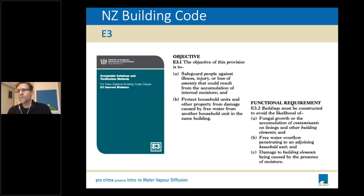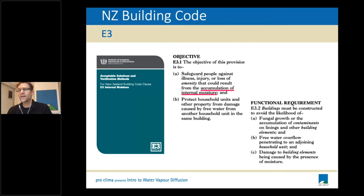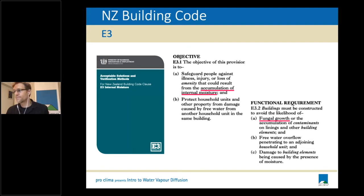E3 - most people on this call will be familiar with it, but a lot of building professionals aren't. It's very easy to ignore E3 in a lot of constructions because there's not a great requirement for it to be addressed. The objectives of E3 are very sound - the idea is to avoid the accumulation of internal moisture, addressing any moisture that comes from inside the building that could affect both health and the longevity of the building structure. It even addresses the fact that our buildings should be constructed to avoid the likelihood of growing mold.